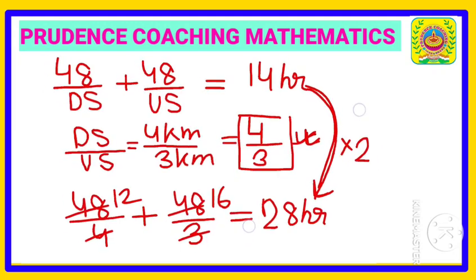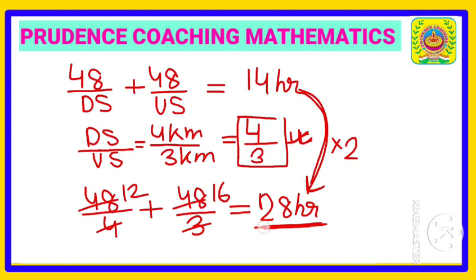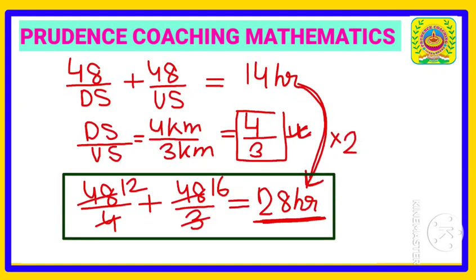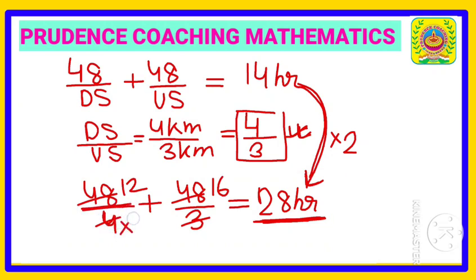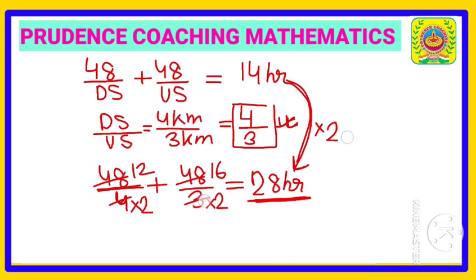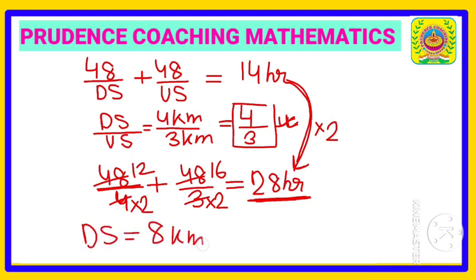Since 14 hours becomes 28 hours, we have a factor of 2 too many. So we divide the ratio values by 2: downstream becomes 4 × 2 = 8, and upstream becomes 3 × 2 = 6.